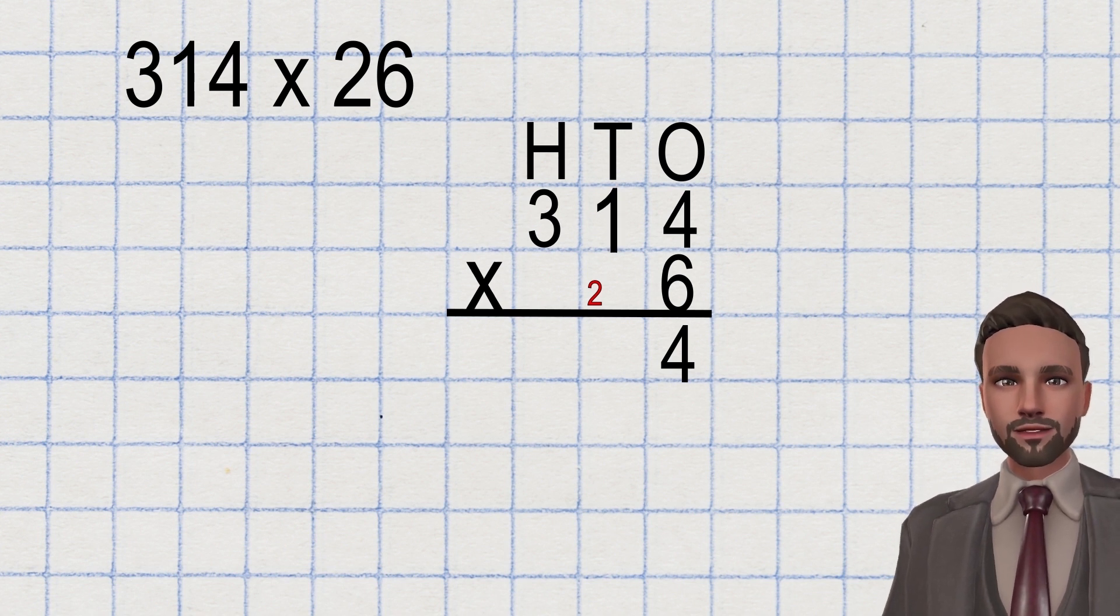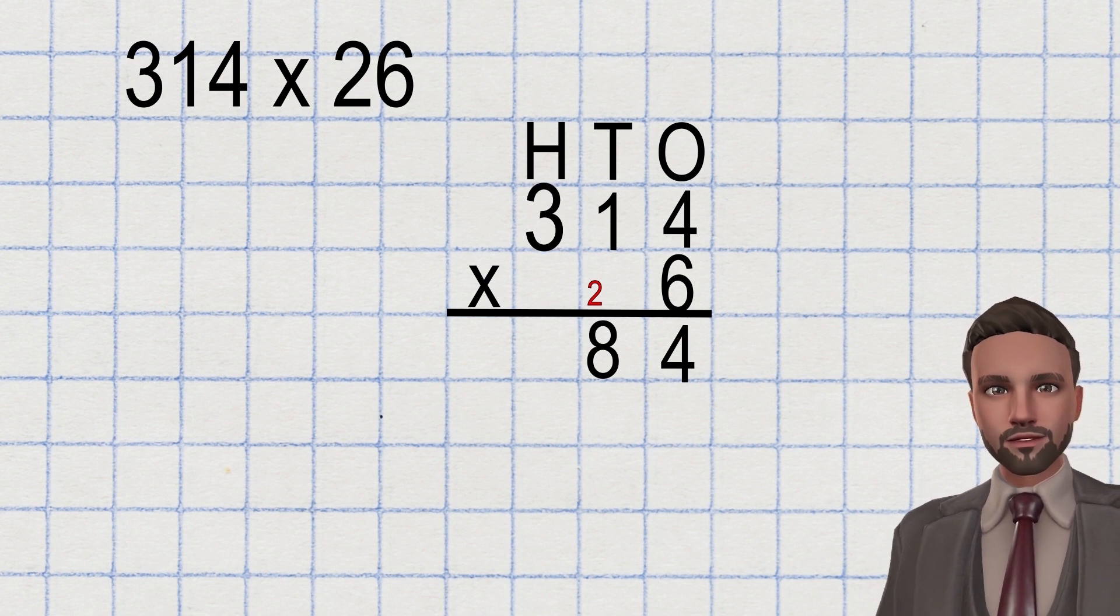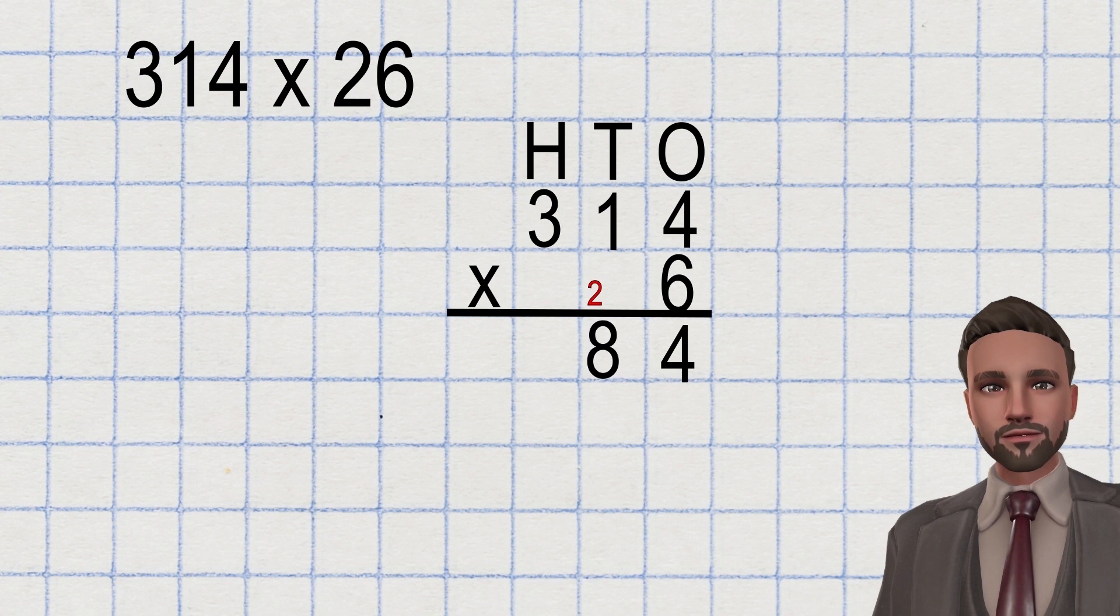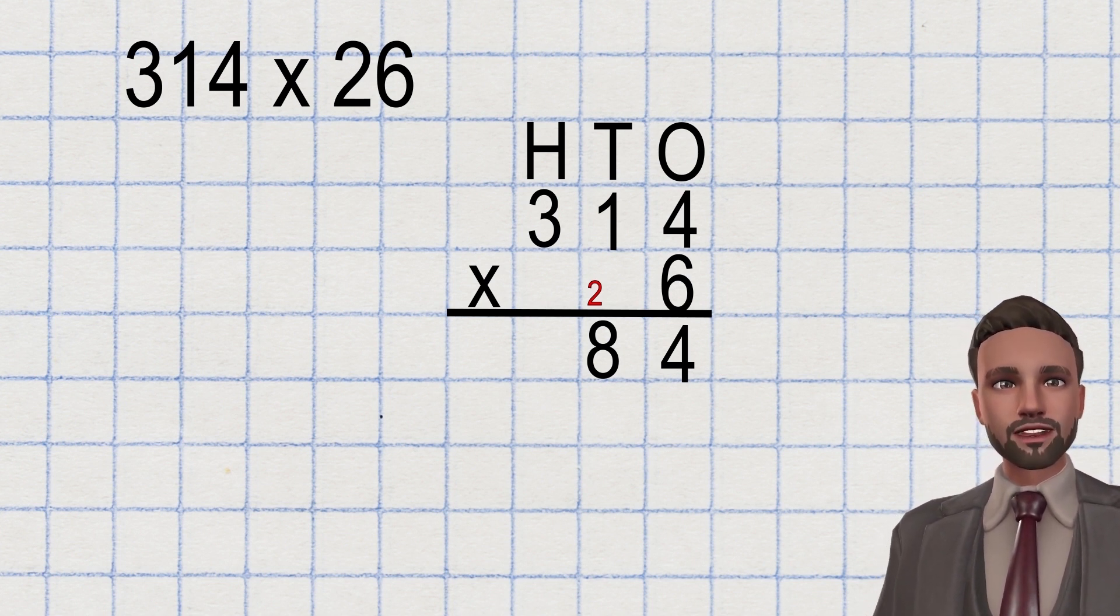Then 1 multiplied by 6 and not forgetting to add the 2. 8, 8 placed beneath our answer line and finally moving into our hundreds column, 3 multiplied by 6. Nothing was carried over so it is simply 18. As there is no digit in the next column I don't need to carry the one over and I can immediately place it beneath the empty line in the thousands column like so.